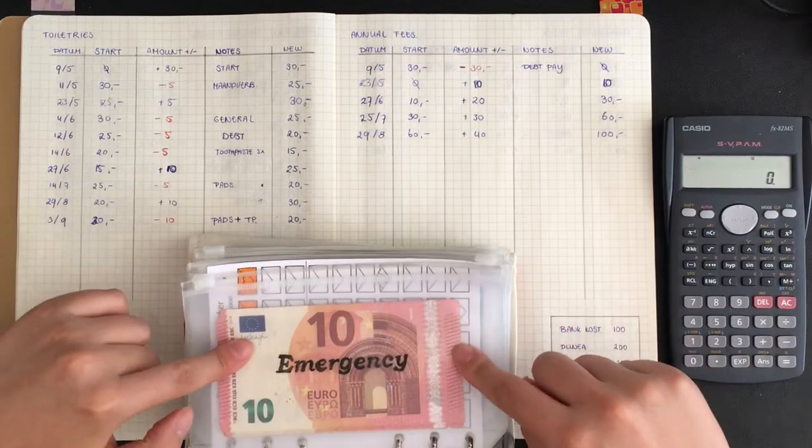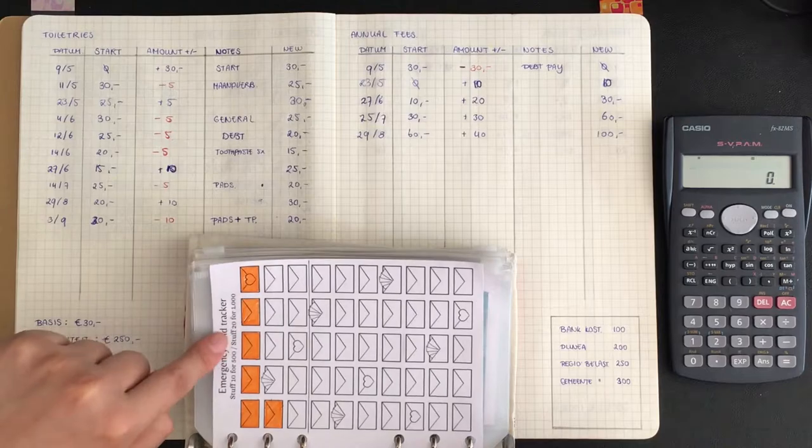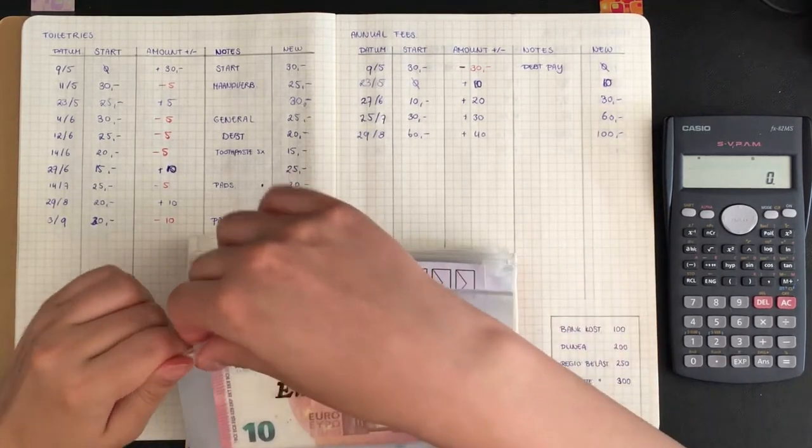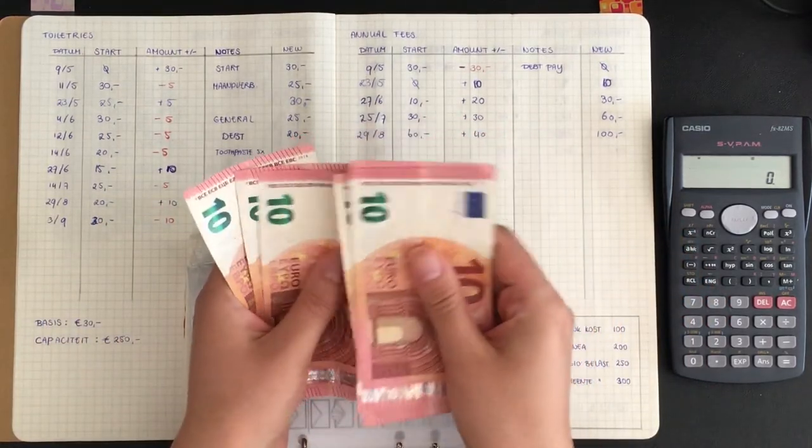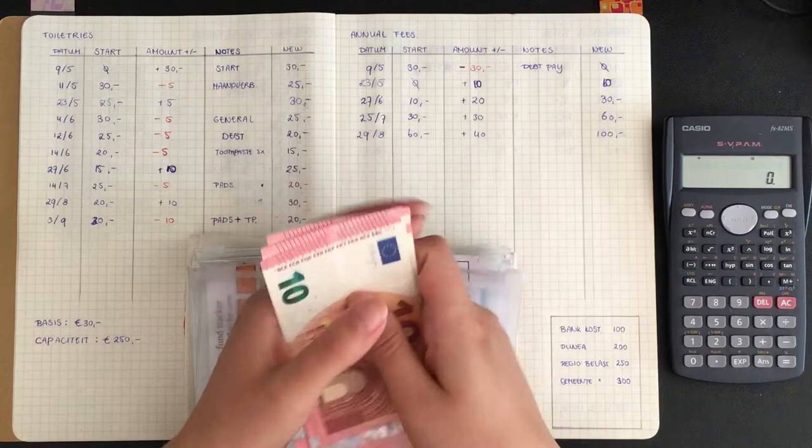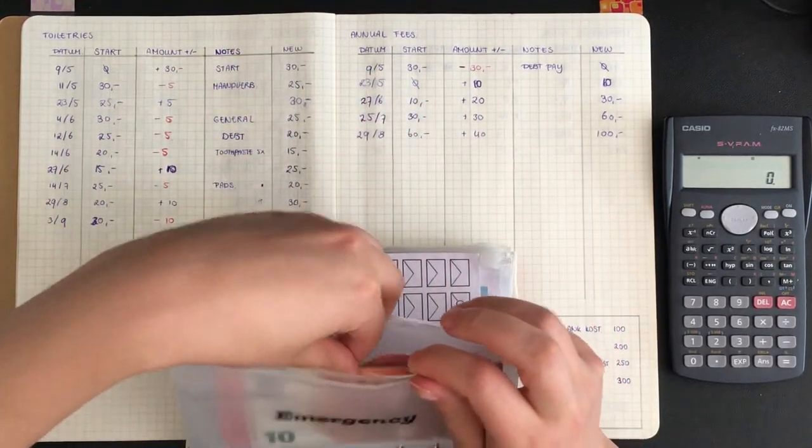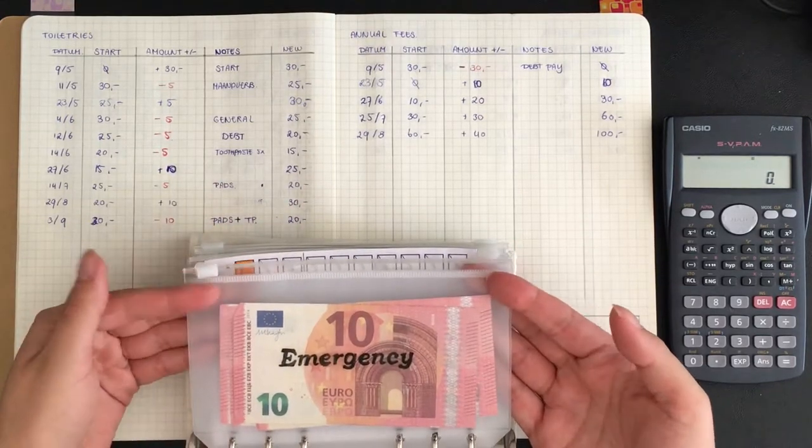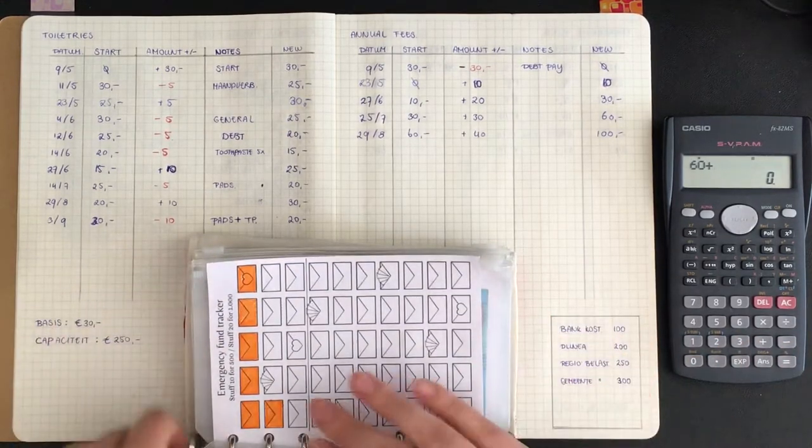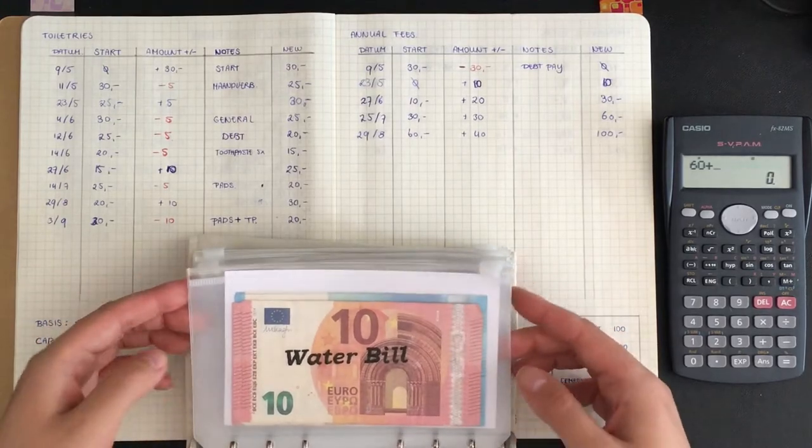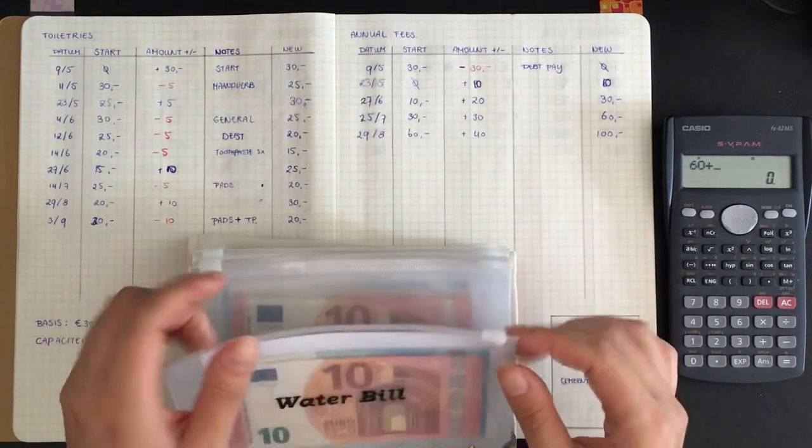So first up is emergency. Emergency should have 60 euros because I have my tracker in here now. So let's see how much we have: 1, 2, 3, 4, 5, 6, which is correct. So that means there are 60 euros in emergency funds. And instead of putting it on a cheat sheet I will just put them in my calculator right away.